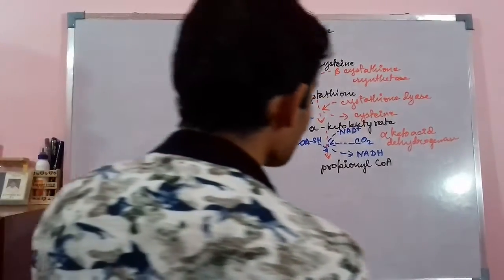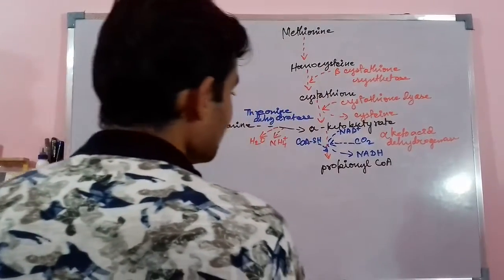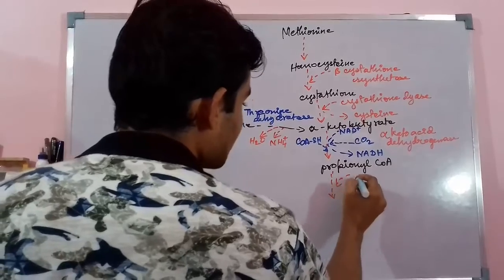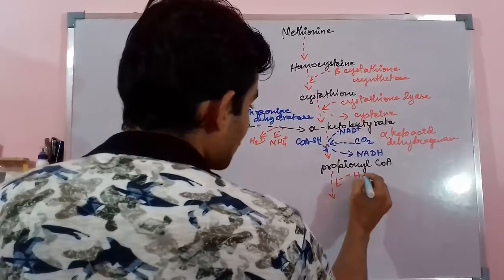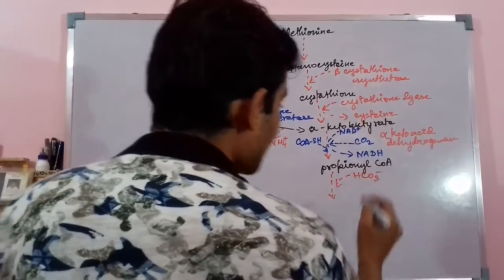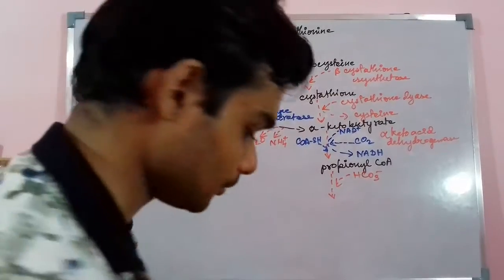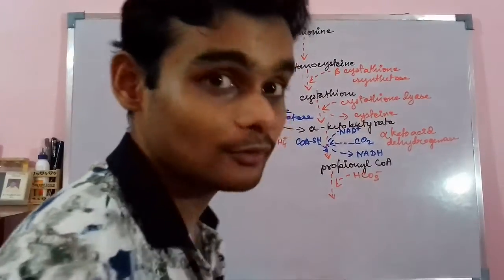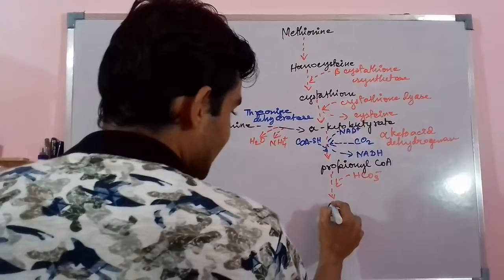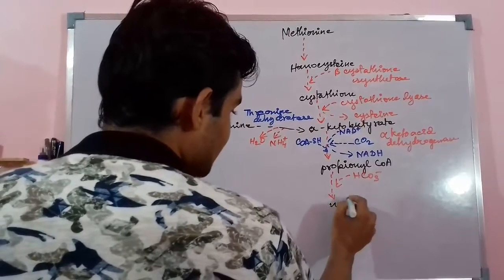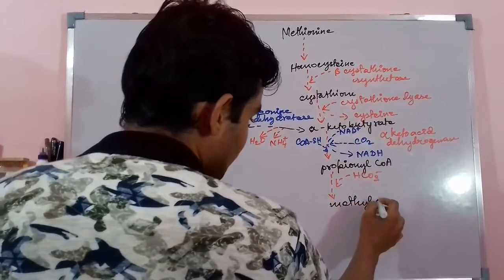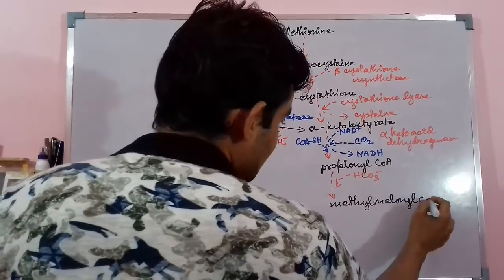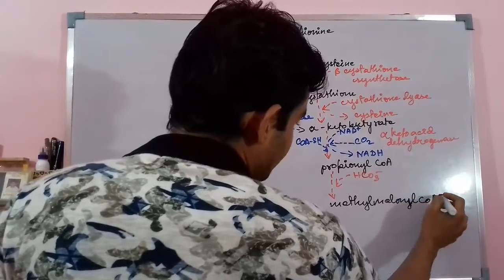Propionyl CoA, in an important step, in the presence of HCO₃⁻ (bicarbonate ion), gives rise to methylmalonyl CoA — a methyl group is being added.